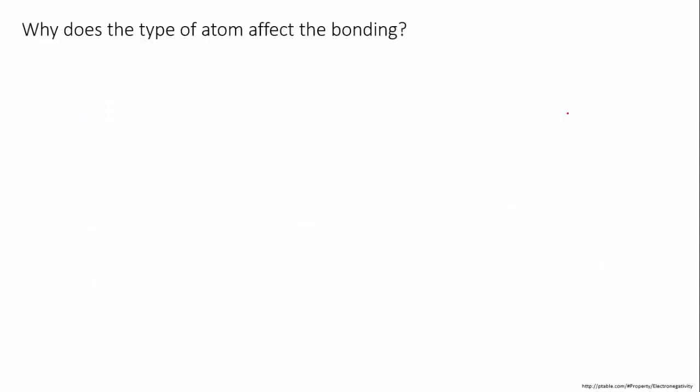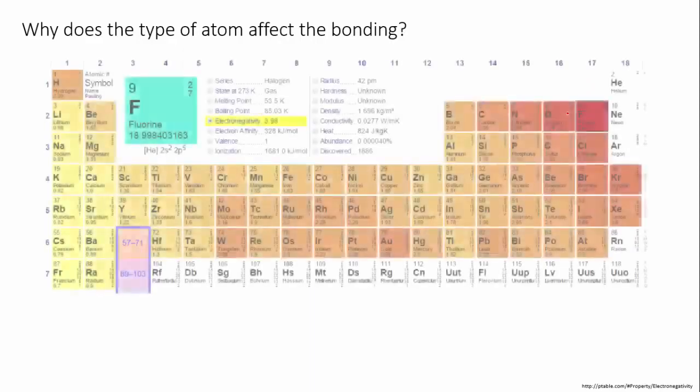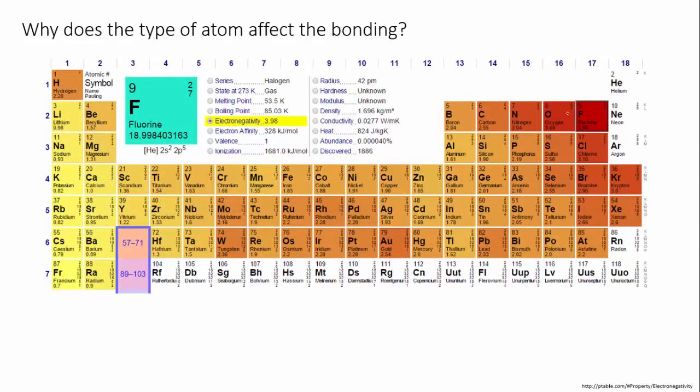So why is it that an atom being a metal or a non-metal affects how they bond? Which kind of bonding two atoms undergo when they meet is determined by the properties of the atoms themselves. We can get a simple feel for how this works by looking at their electronegativity.